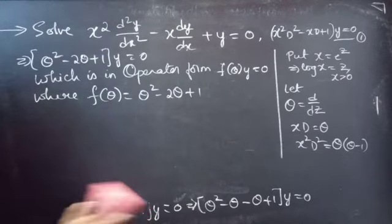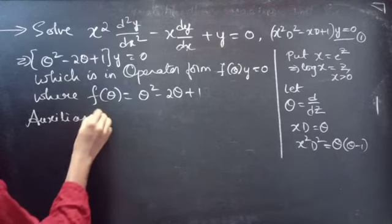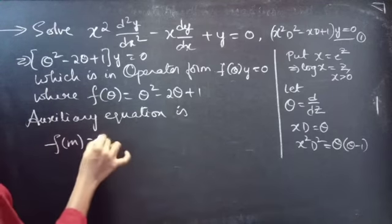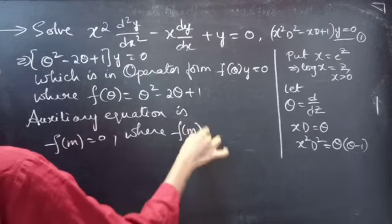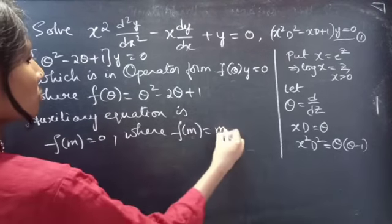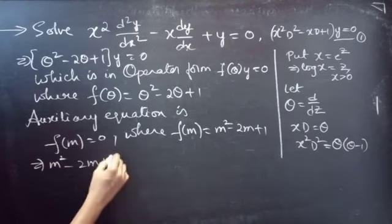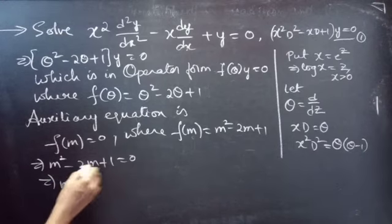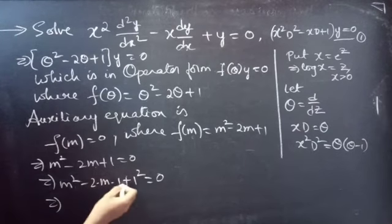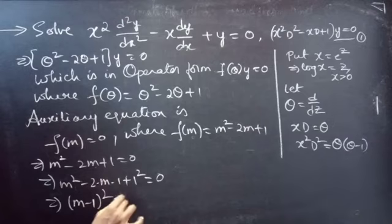Now we need to find the general solution, so we will use the auxiliary equation. The auxiliary equation is f(m) equals to 0, where f(m) equals m² minus 2m plus 1. Just replace the differential operator θ by m. The auxiliary equation becomes m² minus 2m plus 1 equals to 0. We can write this as m² minus 2m·1 plus 1², which is in the form a² minus 2ab plus b², the expansion of (a minus b)². So we can write this as (m minus 1)² equals to 0.